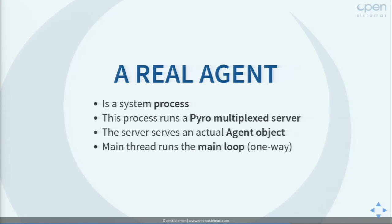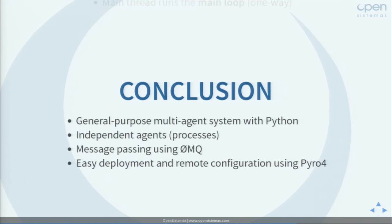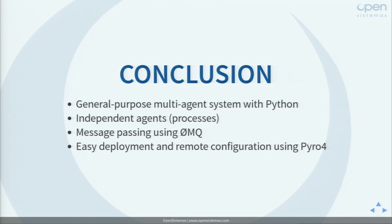A real agent is a system process that runs a Pyro multiplexed server, which serves an agent object using Pyro. There is a main thread that runs the main loop — called a one-way call in Pyro. As a conclusion, we implemented a general-purpose multi-agent system in Python where agents are independent and communicate via message passing, and we achieved easy deployment and remote configuration using Pyro 4.